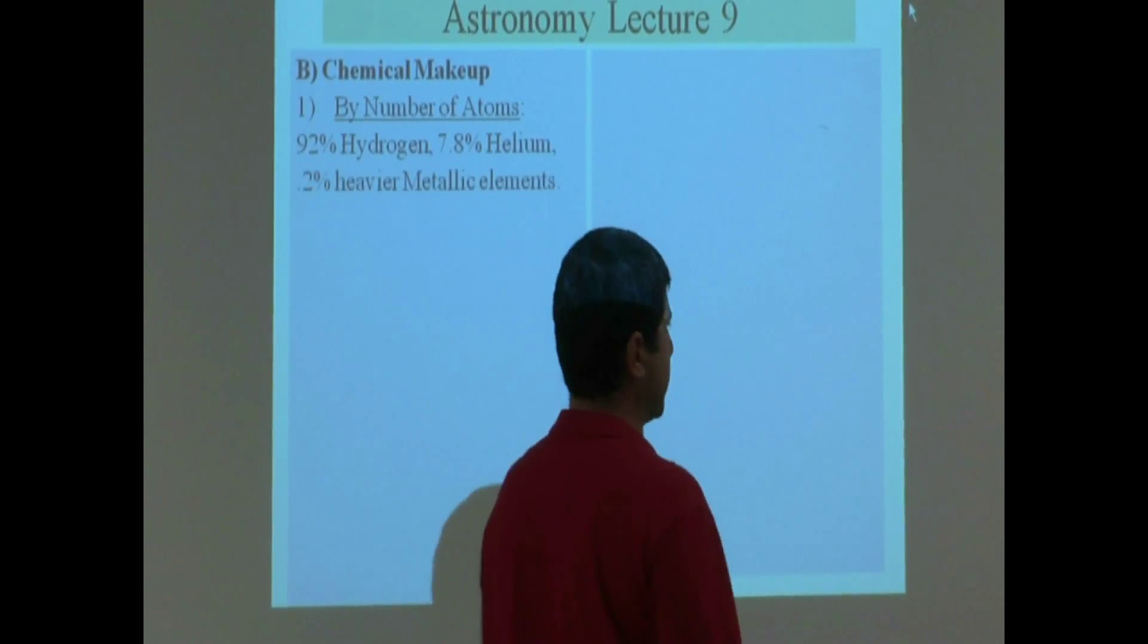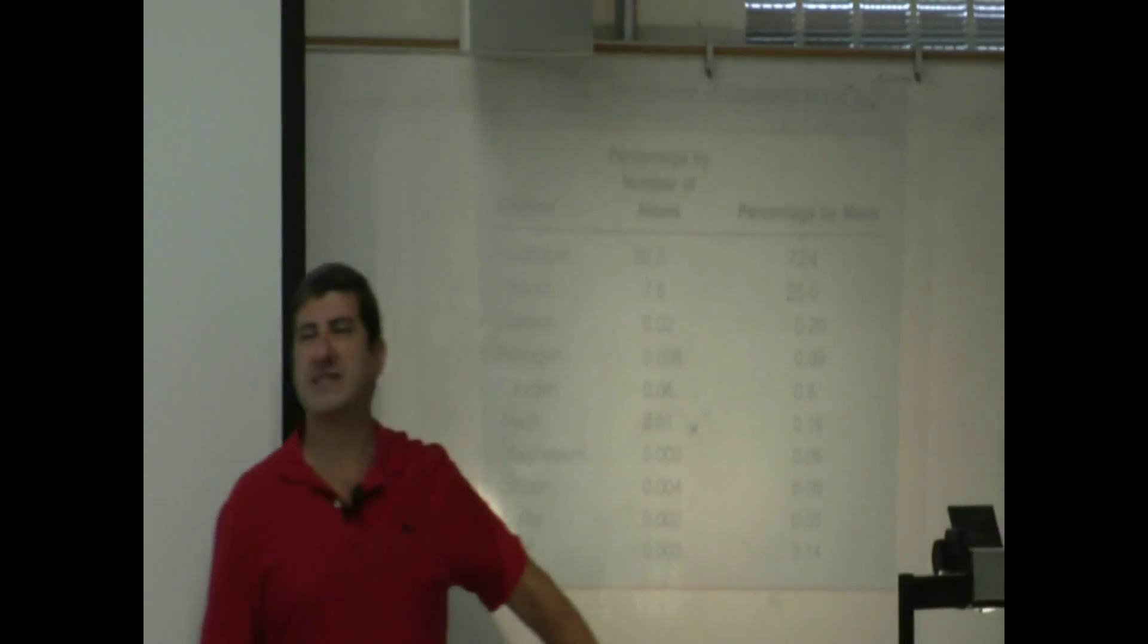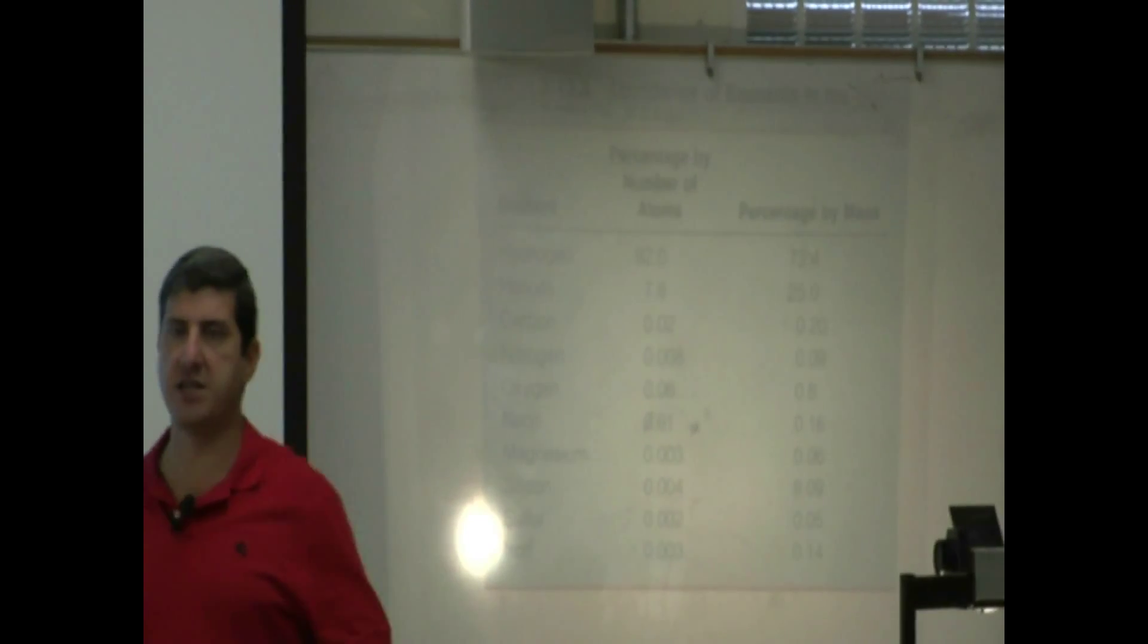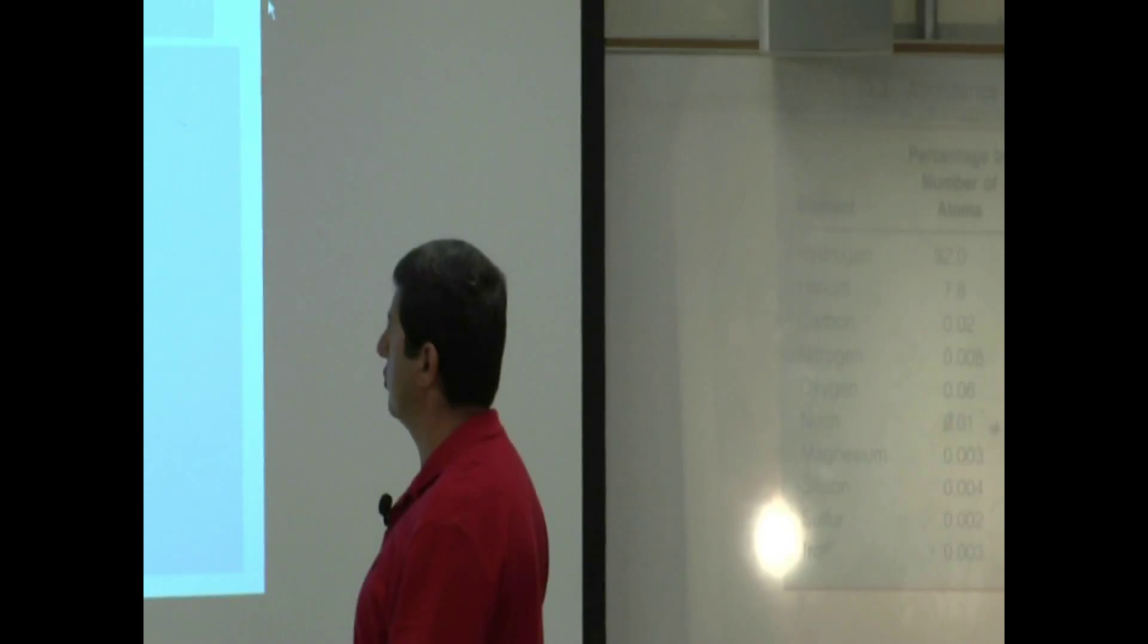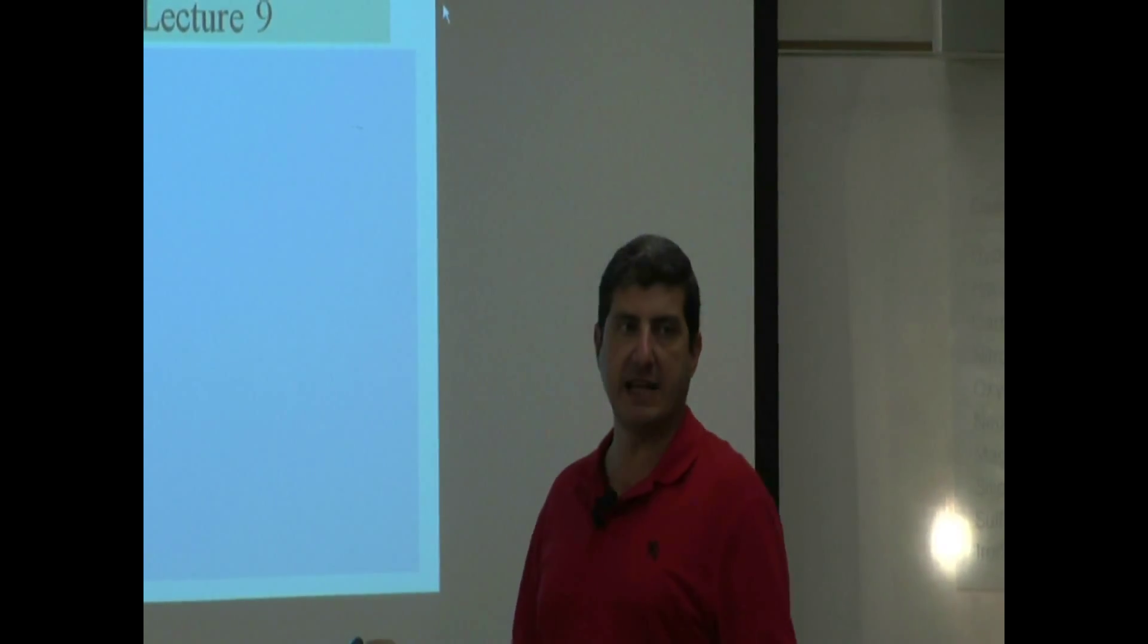Then the rest of the sun, which you can consider all of these together, those would be called metallic substances. Anything heavier than helium. The 0.2% of the sun is heavier metallic elements. So it's not that much.